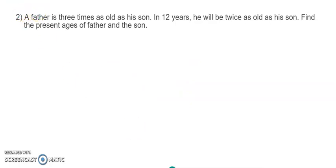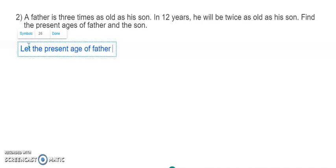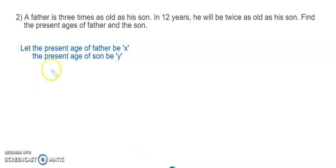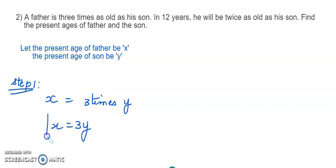Next question is again father and son. Let the present age of father be x and the present age of son be y. Step one: father is three times as old as the son. This is the present age relationship. So father's present age x is three times son's age y, giving us the first equation: x = 3y.